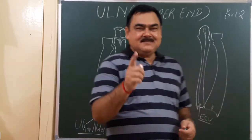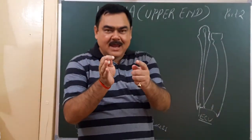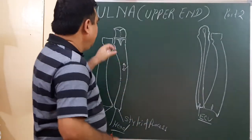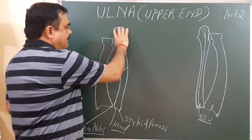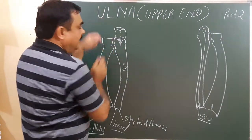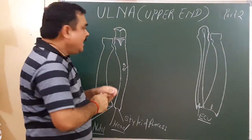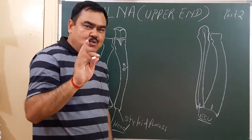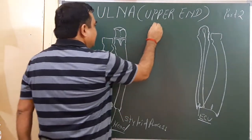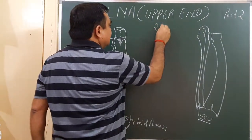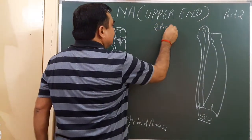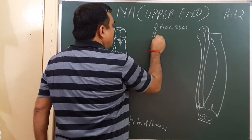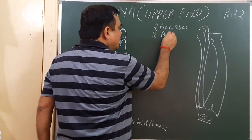Now we will discuss the upper end of the ulna. The upper end has two processes, two articular surfaces, and two notches.